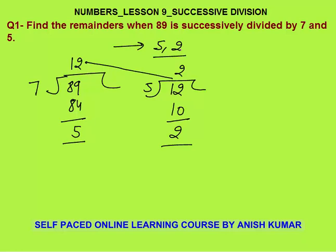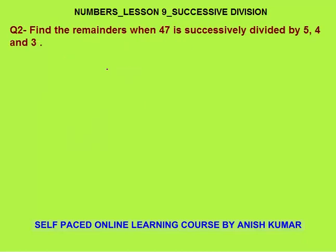The important and only concept in successive division is that the first quotient — this 12 — becomes the number for the second division. That is the basic of successive division.